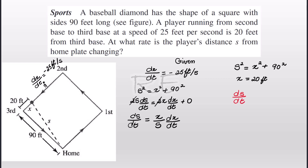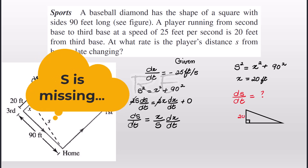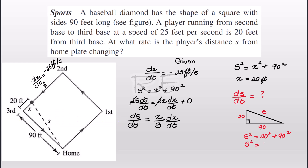ds/dt is the rate of change of the distance from the player to home plate with respect to time, and that is what we're looking for. Our model is the 20-90-s right triangle where s is the hypotenuse. Therefore, s squared is equal to 20 squared plus 90 squared, which is 400 plus 8,100, giving 8,500. Since 8,500 is 100 times 85, s equals the square root of 100 times the square root of 85, which is 10 times square root of 85.